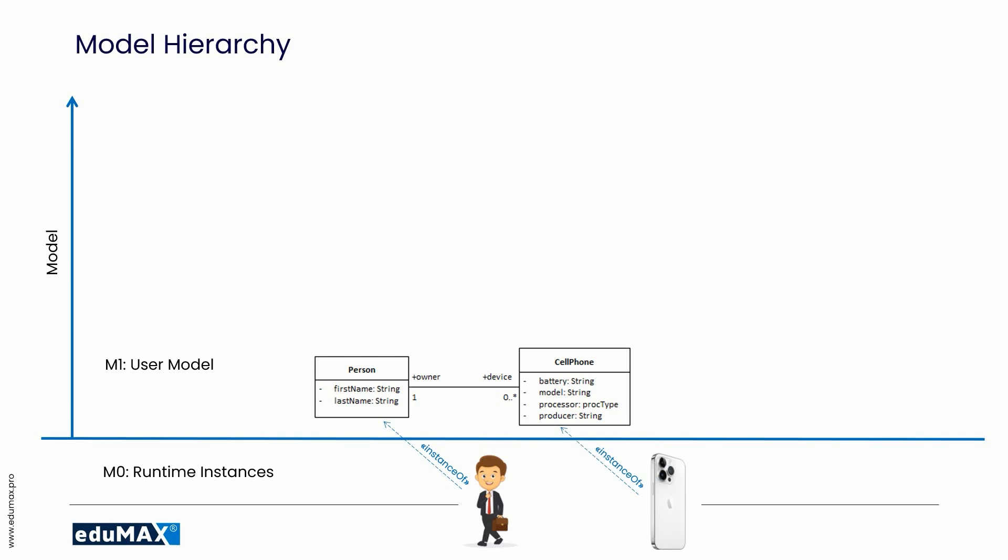On the user model level, M1 level, we can create a snapshot which represents instances. You may be confused because these instances on the right represent real-time elements, but they are part of the model. And these are real objects from the real world.